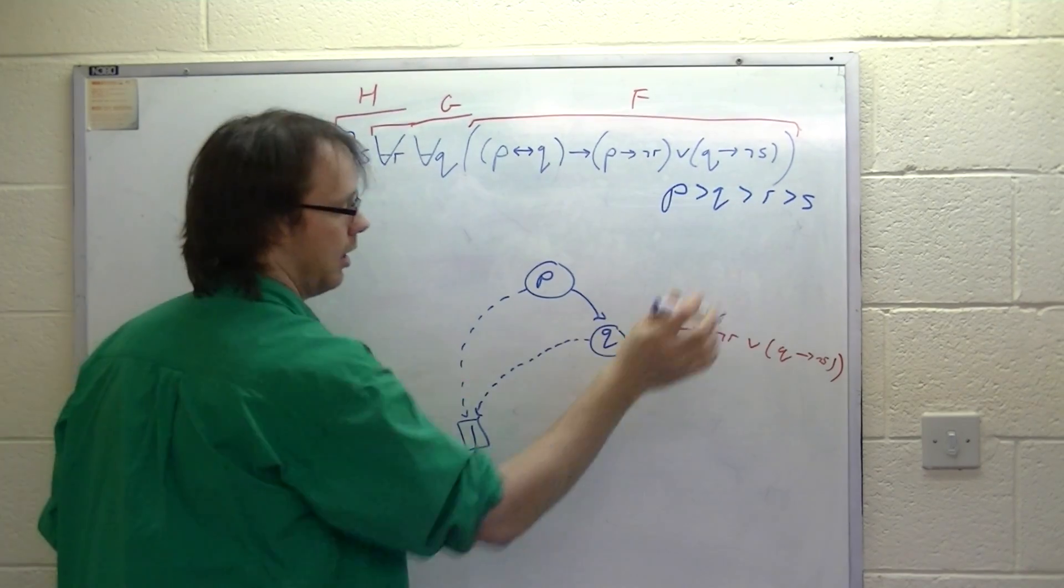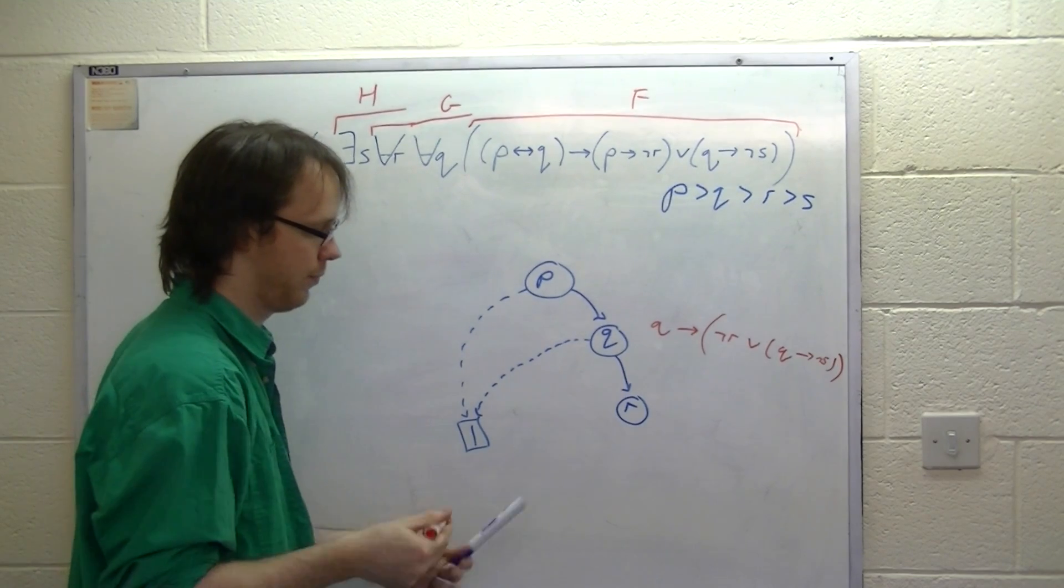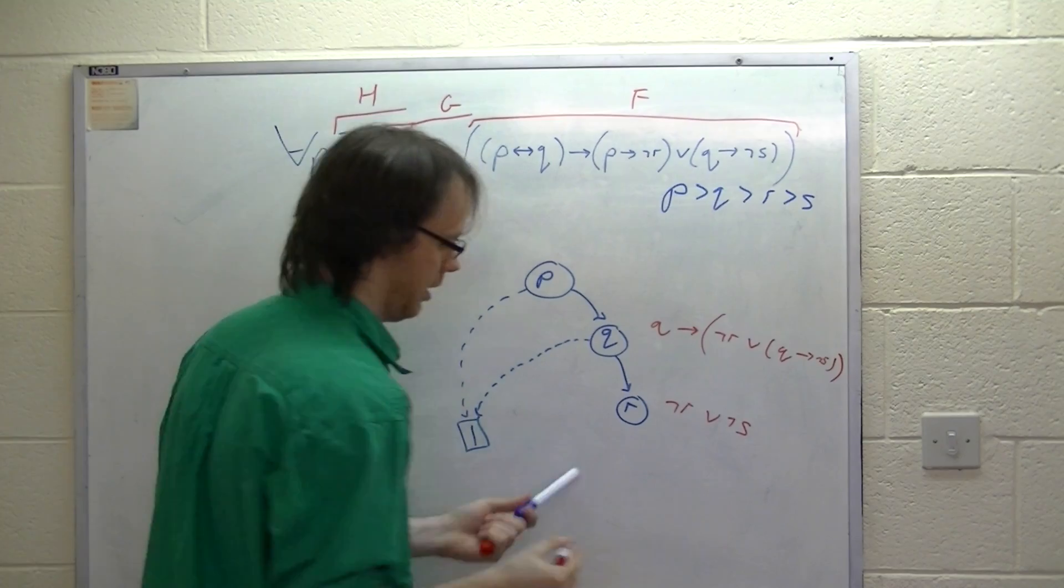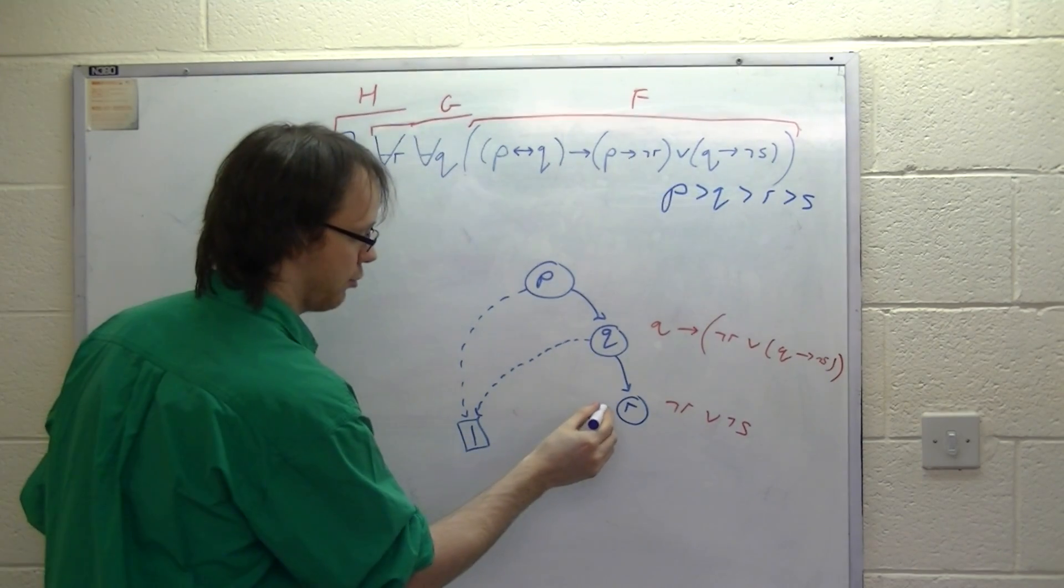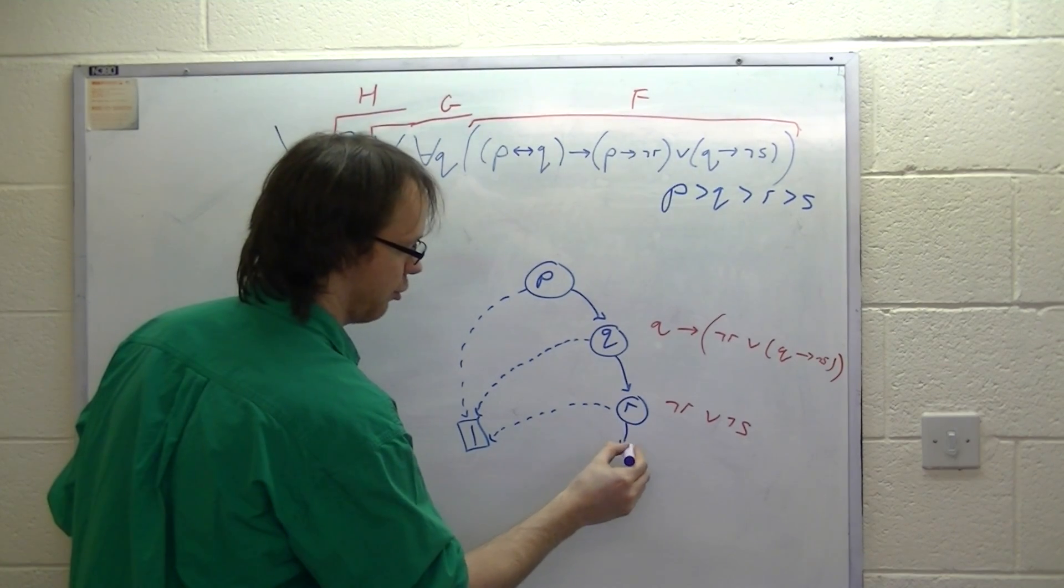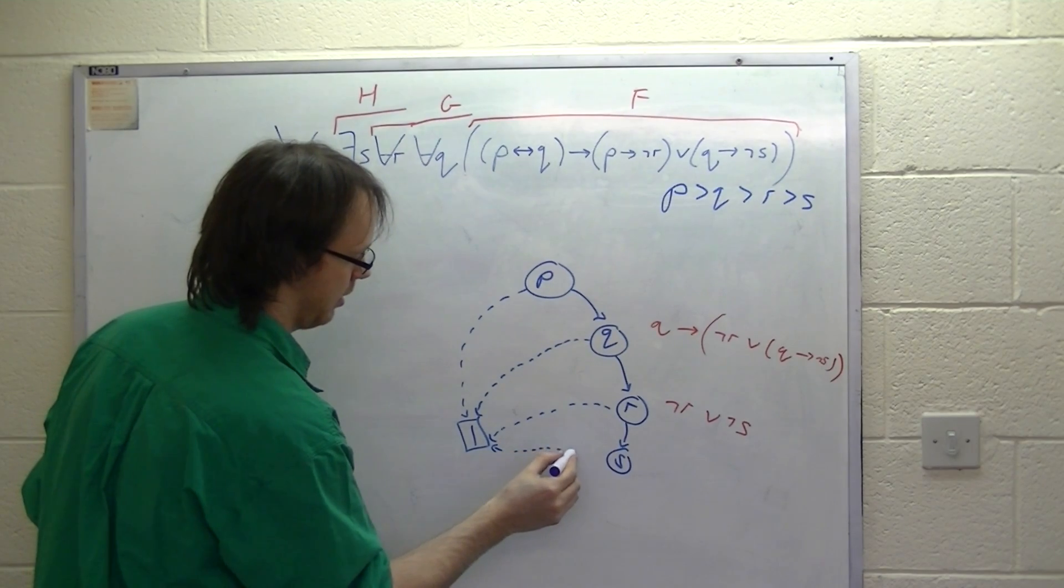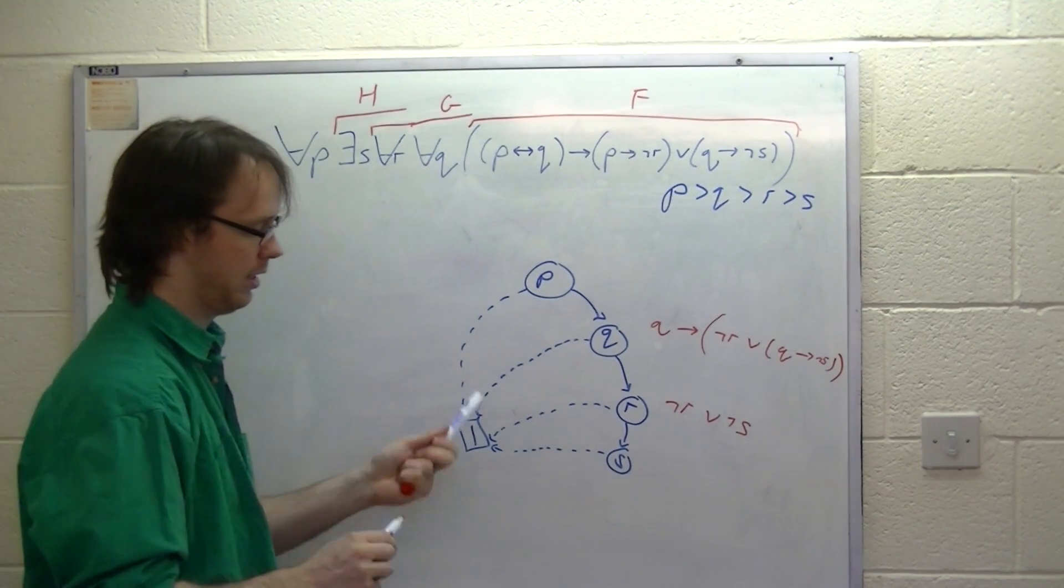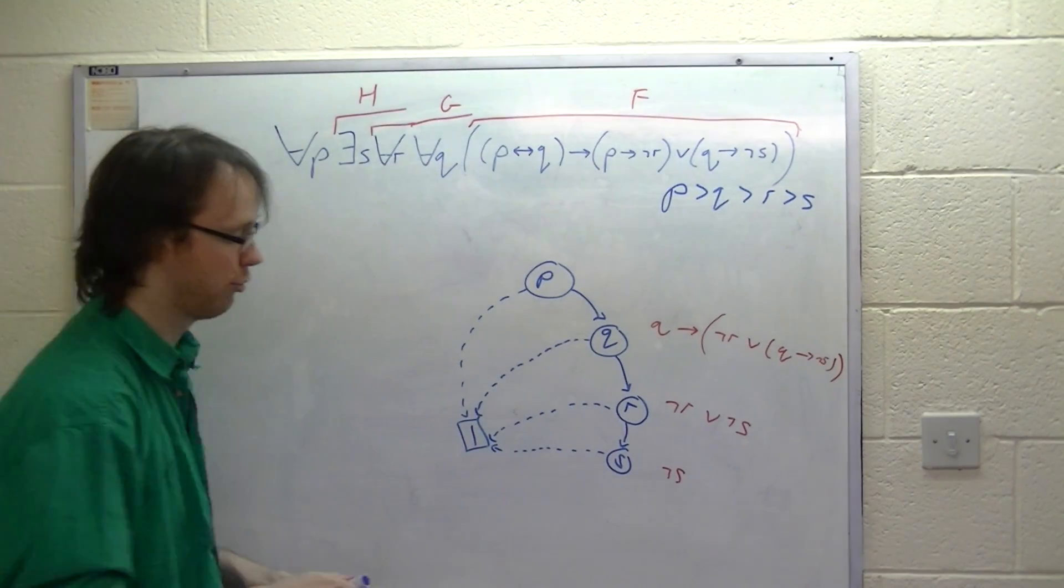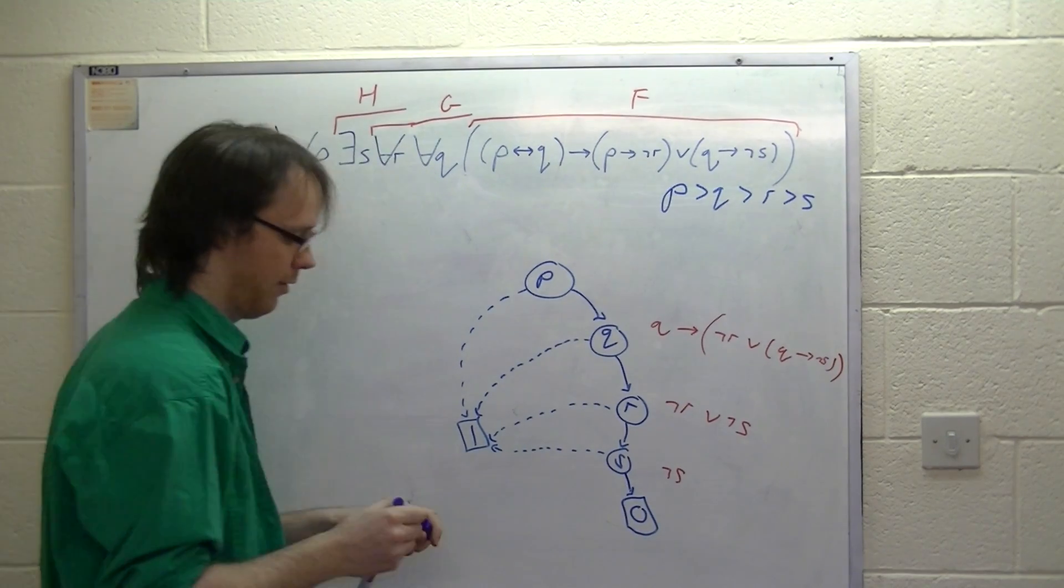If Q is true, it's not so nice. We have to make a decision on R. If R is false, then we get true. R is true, decision on S. If S is false, we get true, otherwise we get false.